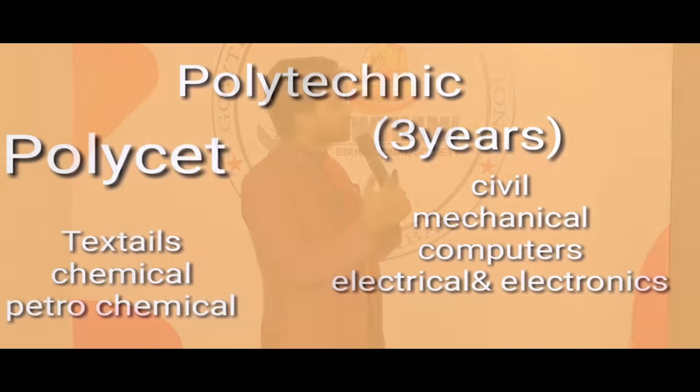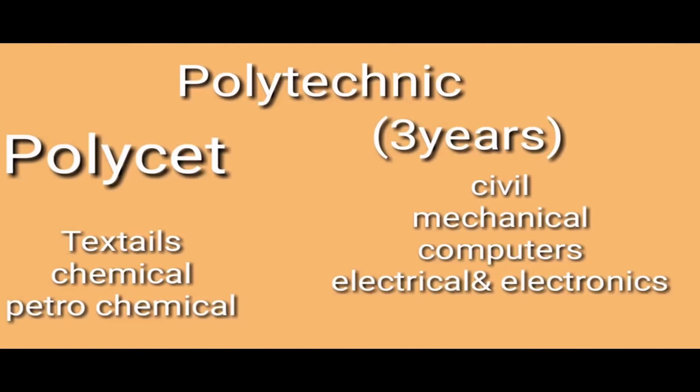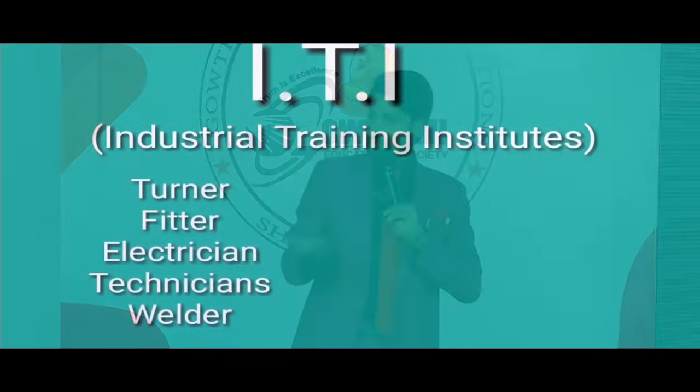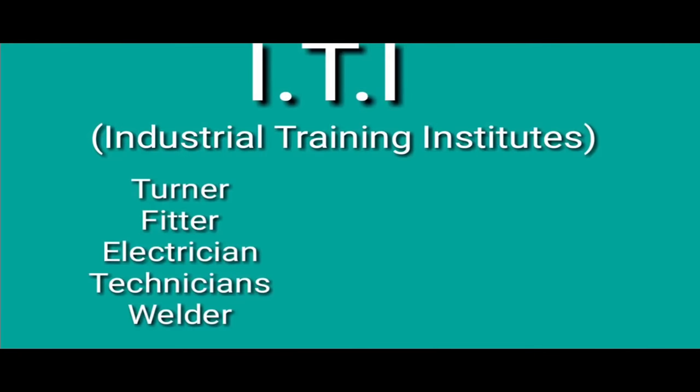If you have a polytechnic, then you will have a 3-year course in Civil, Mechanical, Computers, Electrical, etc. If you pass the poly-set entrance exam, then you will get a polytechnic seat. If you have vocational, then you will have other subjects. If you have ITI, then you will have a lot of ITI options.